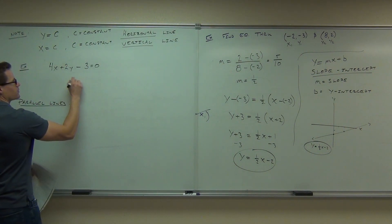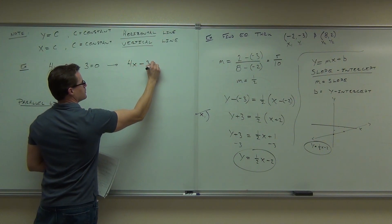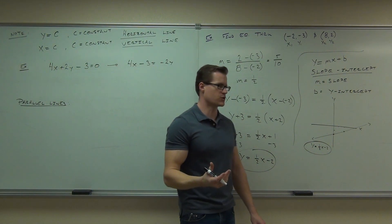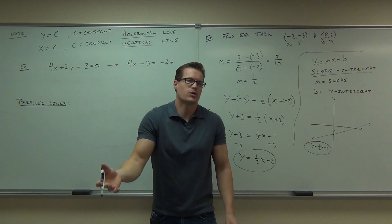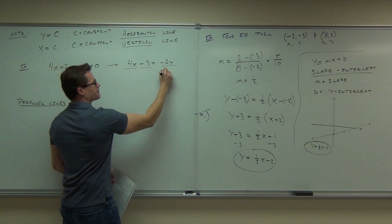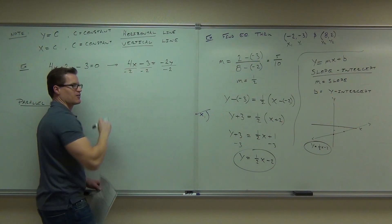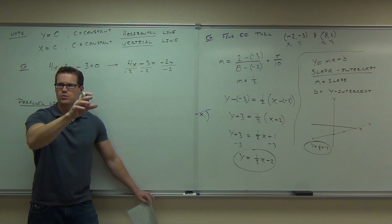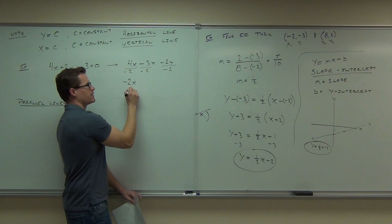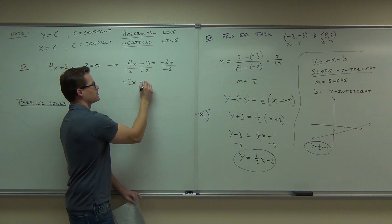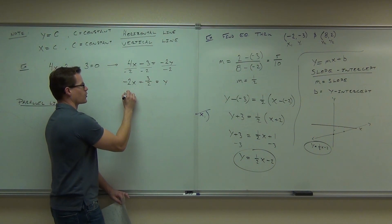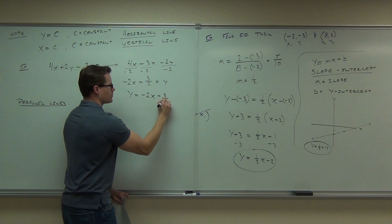If you subtract 2Y, you're going to end up with 4X minus 3 equals negative 2Y. Typically we don't like a negative coefficient in front of Y, but we just divide by negative 2. If you're good with signs, you can do that pretty easily. 4X over negative 2 gives you negative 2X, and then plus 3 halves. So Y equals negative 2X plus 3 halves.